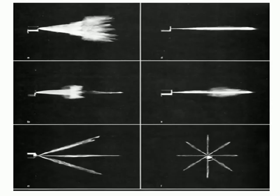Liquid fuel is injected at high velocities as one or more jets through small orifices or nozzles in the injector tip. The fuel atomizes into small droplets and penetrates into the combustion chamber. The droplets vaporize and mix with high temperature and high pressure cylinder air.